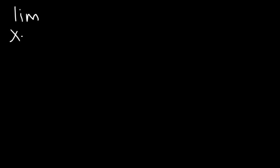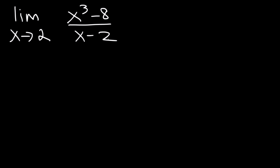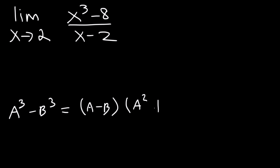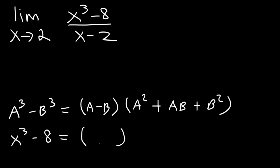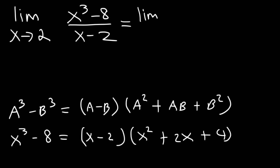What is the limit as x approaches 2 of x cubed minus 8 divided by x minus 2? We need to factor using the difference of perfect cubes formula: a cubed minus b cubed equals a minus b times a squared plus ab plus b squared. Here a is x and b is 2, so a squared is x squared, ab is 2x, and b squared is 4.